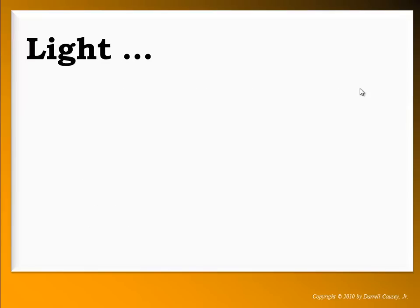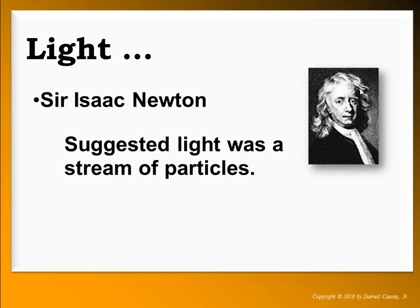Light was first studied back in the 1600s. It was an area called optics. Newton, Huygens, Hooke, Hubble, and a lot of these scientists were interested in light and its peculiarities. Newton realized you could refract light into its different waves and discovered the light spectrum for visible light. Sir Isaac Newton suggested light was a stream of particles, called corpuscles. He thought they were little streams of particles.